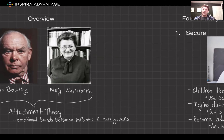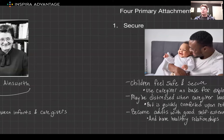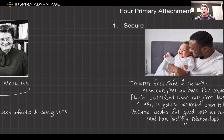Let's dive deeper into the four primary attachment styles identified by Ainsworth — these are the ones you definitely need to know for the MCAT. Let's start with secure attachment. Children with this style feel safe and secure with their caregivers, use the caregiver as a base for exploration, and are usually comfortable with strangers when the caregiver is present. When put into a strange situation, the child may show distress when the caregiver leaves but is quickly comforted upon their return. As adults, they tend to have healthy, trusting relationships and good self-esteem — this is typically what you want to aim for.